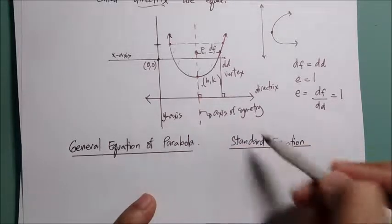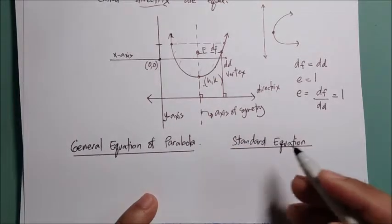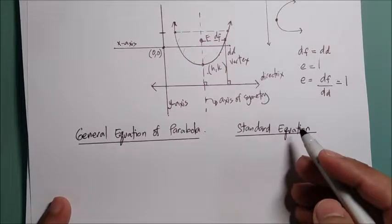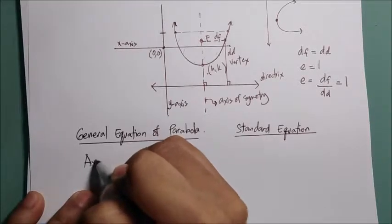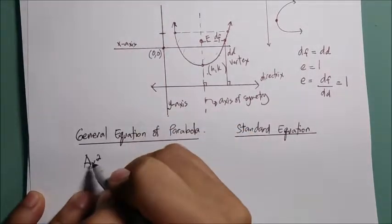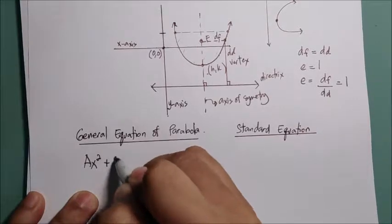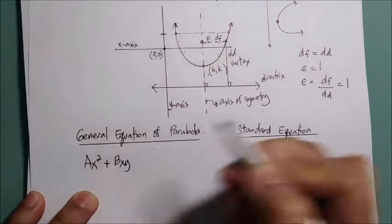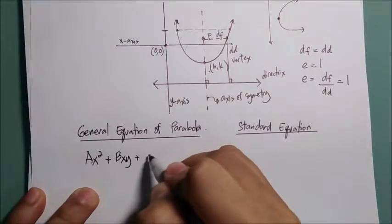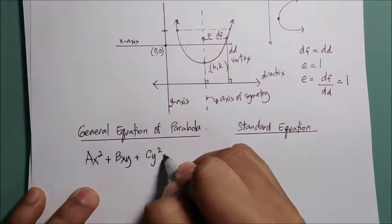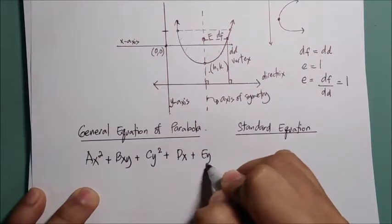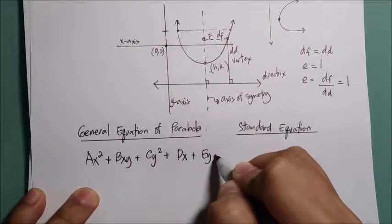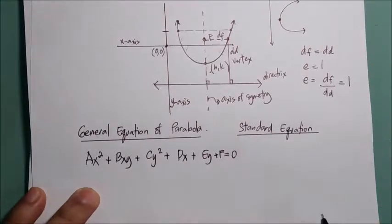Since a parabola is a conic section, the general equation of a conic section is ax² + bxy + cy² + dx + ey + f = 0. You can transform a parabola equation into standard form or recognize it from this general form.